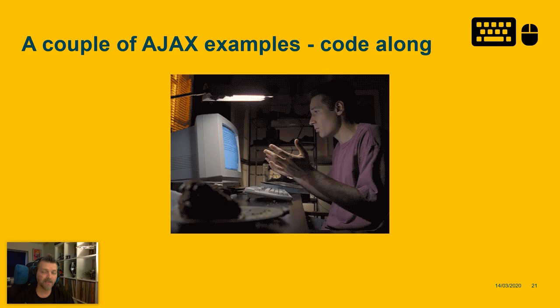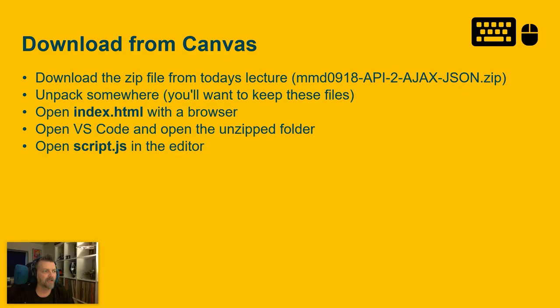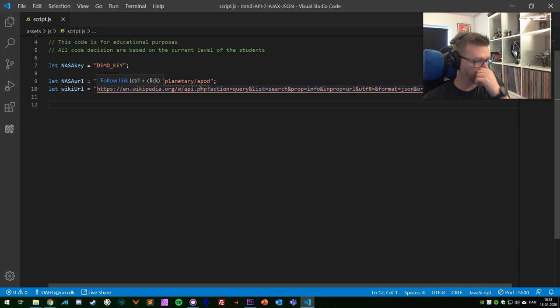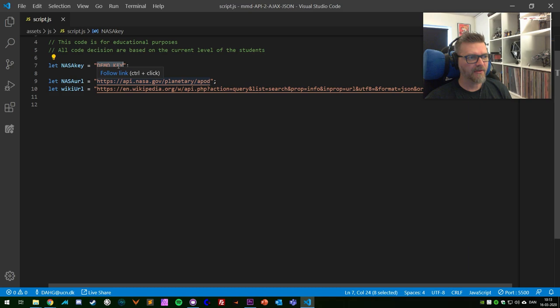Let's find some examples and do some code-along. Download the zip file from today's lecture on Canvas, unpack it, open the entire folder in Visual Studio Code, open index.html in a browser, and open script.js in an editor. Pause the video and continue when you're done setting this up. Your API key from NASA — put that in instead of the demo key string value. Then we're good to go with the NASA part.